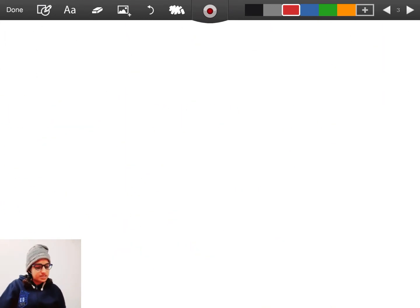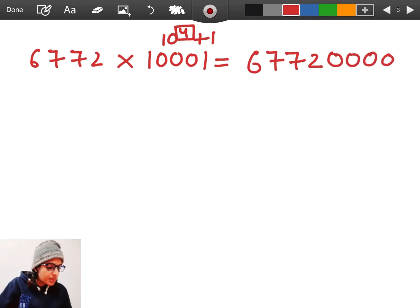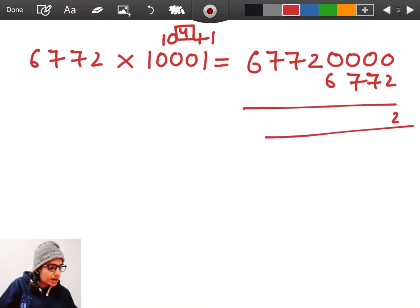We will take another example. Let's take 6,772 and we will multiply this by 10001. So 10001 is 10 raised to the power 4 plus 1. Just focus on this power. It has four zeros. So we will add four zeros after this number and we will add the original number to this new number and the answer will be, yep.